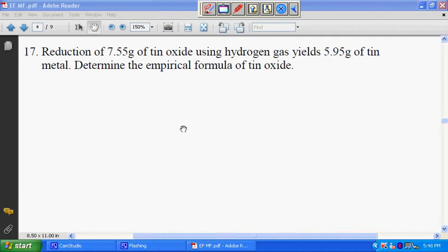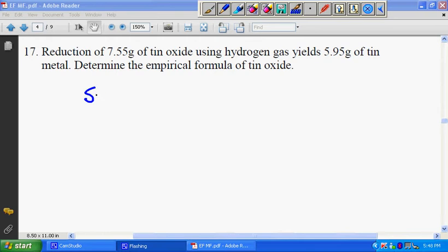What you need to know is that tin oxide would have a formula of SnOy. We do not know what exactly is the ratio, so we write SnOy, and this compound has 7.55 grams. You need to know that SnO consists of tin as well as oxygen.